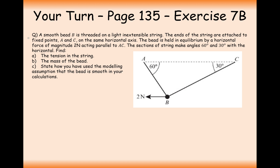Let's have a go at the practice question. Reading the first part carefully: a smooth bead B is threaded on a light inextensible string — so same string, same tension throughout. We have a 2 newton force acting to the left. The question doesn't give the weight, so I'll add Mg as an unknown. That gives two unknowns, T and M, with a horizontal and vertical component — two equations, so simultaneous equations.